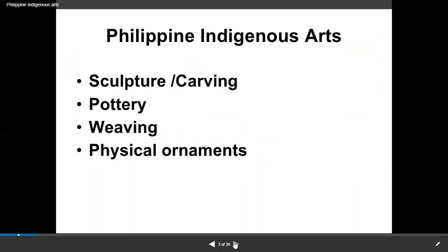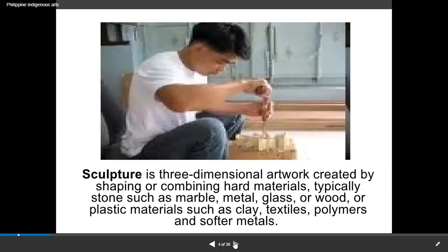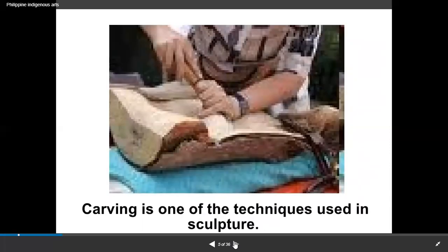We now have the types of indigenous arts in Philippine communities: sculpture and carving, pottery, weaving, and physical ornaments. Sculpture is a three-dimensional artwork created by shaping or combining hard materials — typically stone such as marble, metal, glass, or wood — or softer materials such as clay, textiles, or polymers. Carving, on the other hand, is one of the techniques used in sculpting — it is part of the sculpture process.